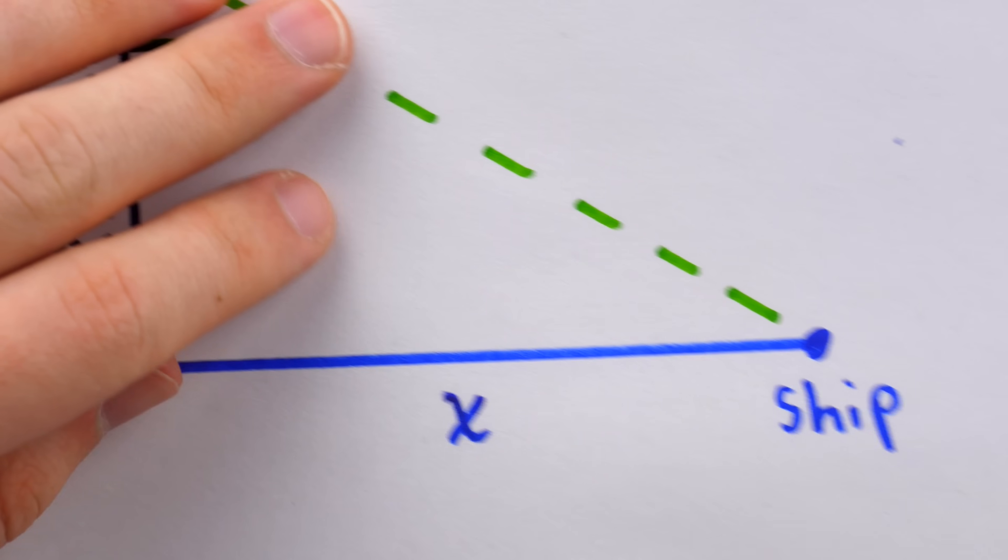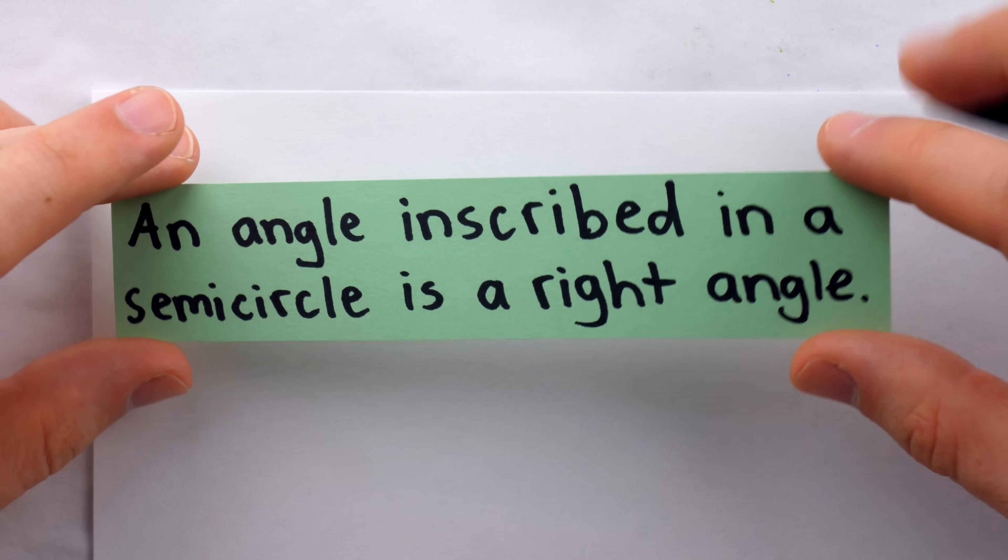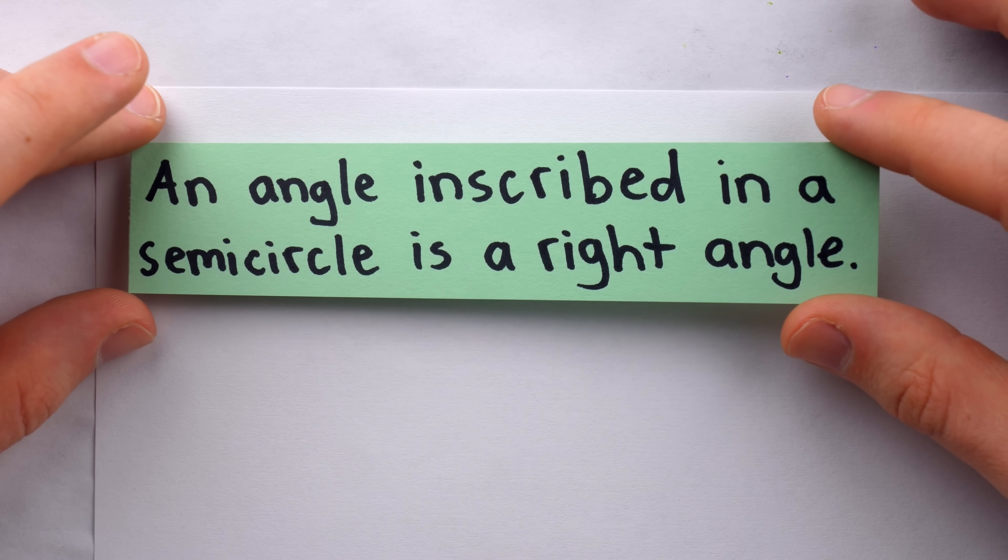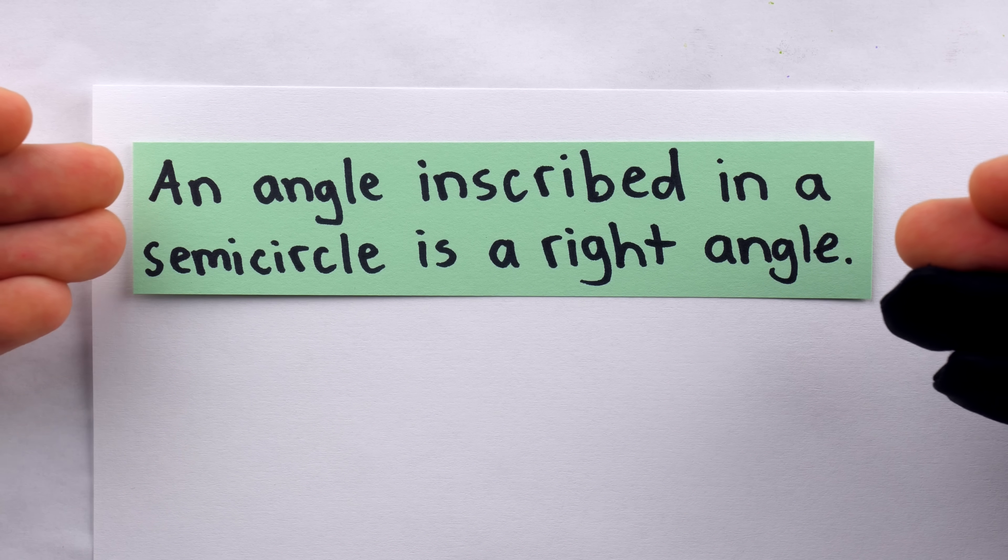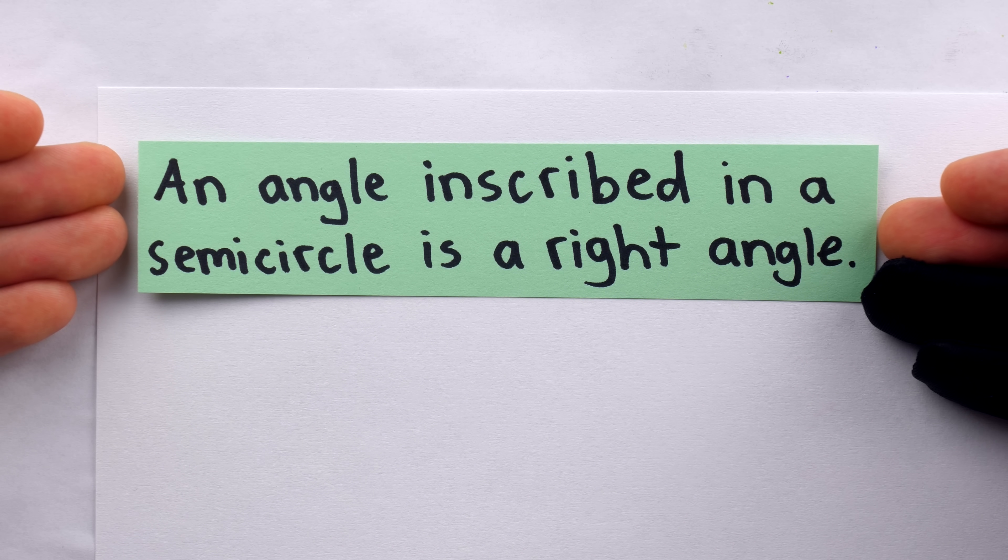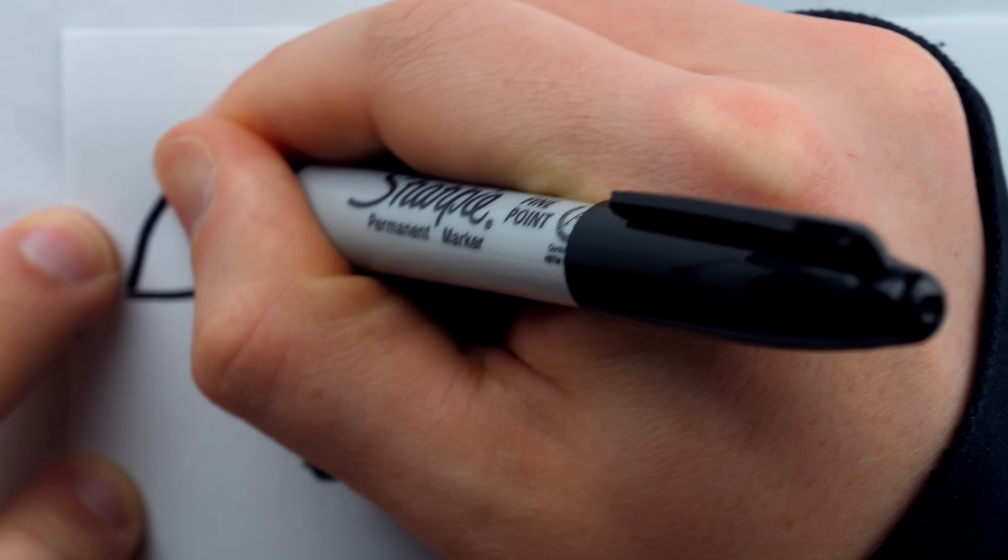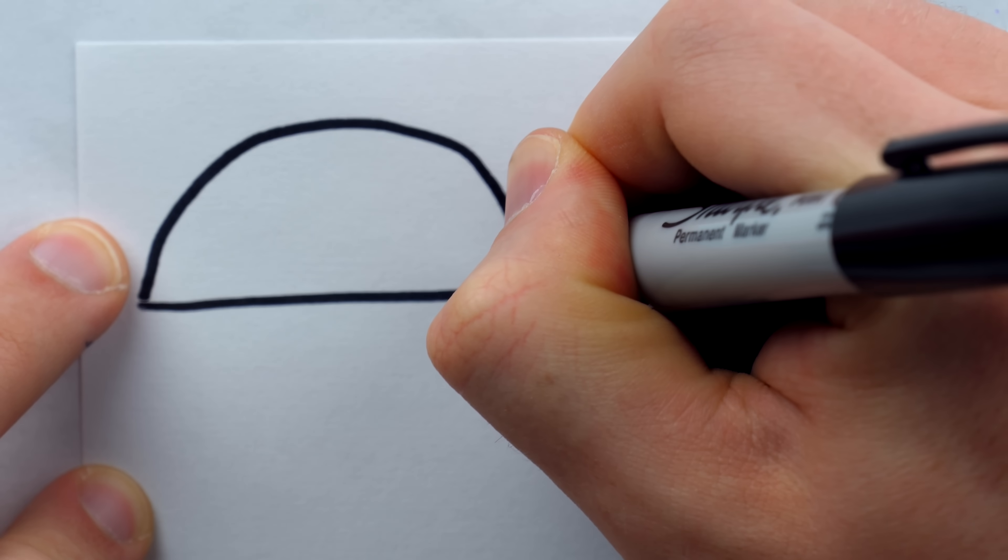These are some of Thales most impressive accomplishments, though I think for us as math people, his most impressive feat was the introduction of logical proof. So let's take a quick look at how he might have proven one of these statements. One of the statements credited to him is that an angle inscribed in a semicircle is a right angle. How is this proven? Well, let me give you my best shot at a semicircle, that is half a circle, it would look something like this.